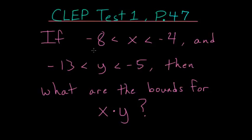If x is between negative 8 and negative 4, and y is between negative 13 and negative 5, then what are the bounds for x times y?